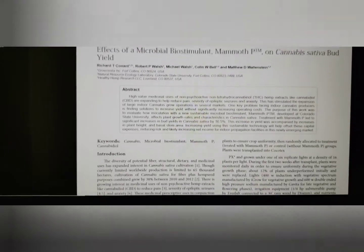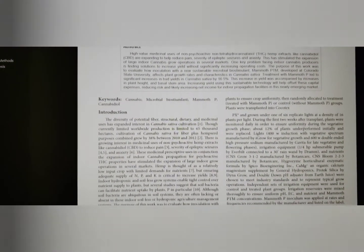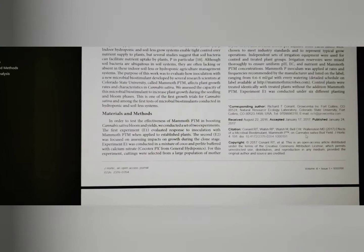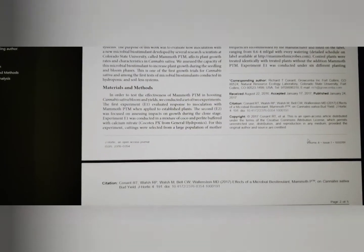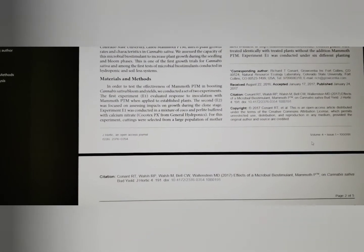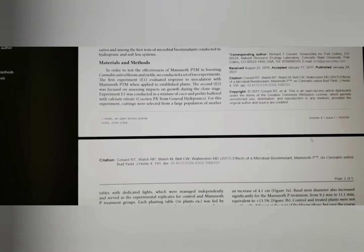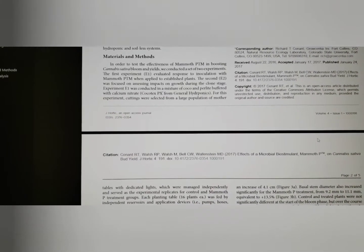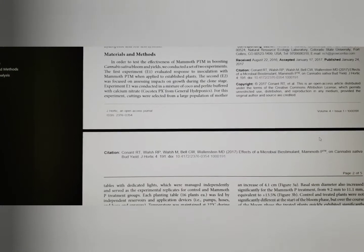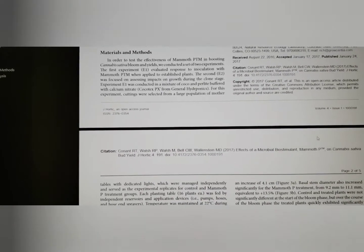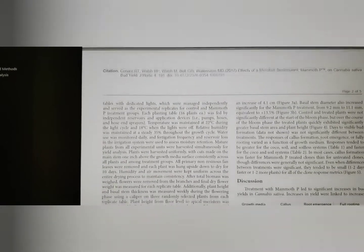We can scroll past all this introduction, their methods and materials. Basically, to summarize that real quick, they used cannabis plants and one of them was treated with mammoth P soil microbes, the other one was not. And they watched them grow.